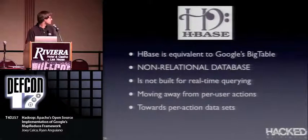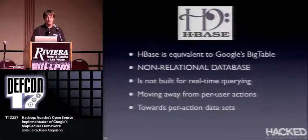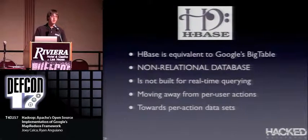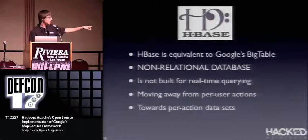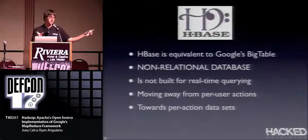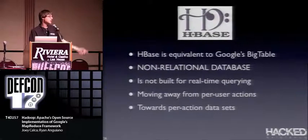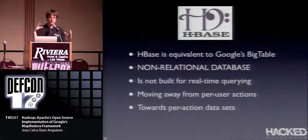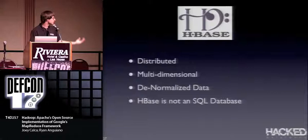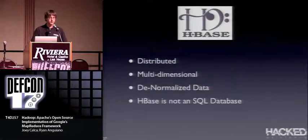HBase is Hadoop's equivalent to Google's BigTable — a non-relational database. It's a tough concept for those of us who grew up with relational databases. It's not built for real-time querying; you're not pulling per-user login information from it. Instead, you move toward per-action data sets: show me all users who did this action, get that huge data set, and run it through a MapReduce program. HBase is distributed and multidimensional with denormalized data — you don't worry about BCNF or normalization, you just store everything you need with links everywhere.